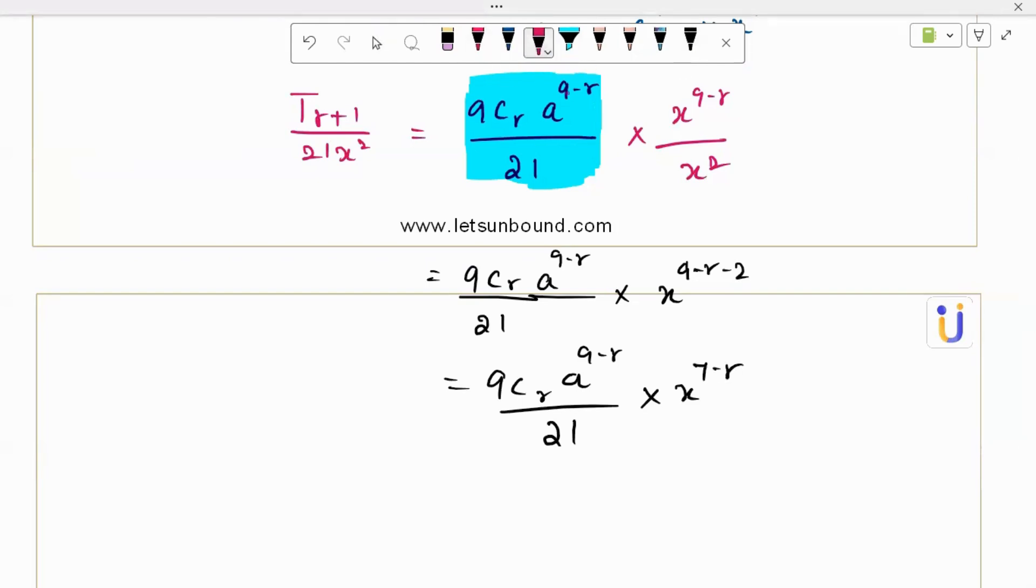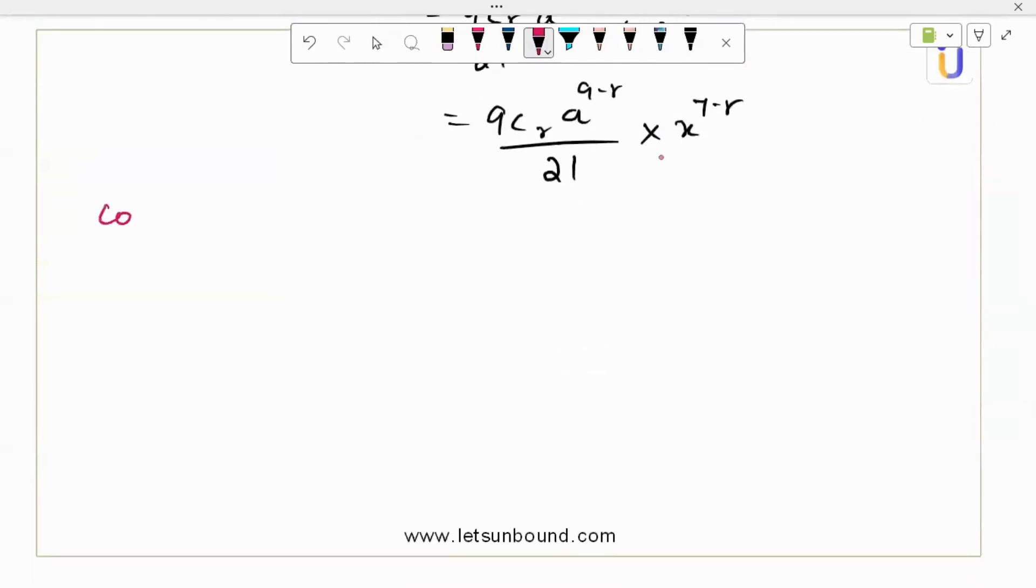Now we are talking about what is given to us is coefficient of x power 4 is 8 by 7 a power 5. Okay? From this I can easily find what is the fourth term. So your x power 4 means that is 7 minus r equal to 4. 7 minus r equal 4 implies r is going to be 3.